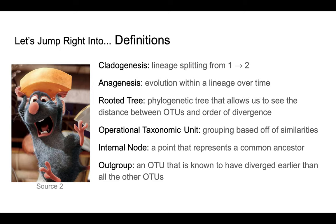A rooted tree is a phylogenetic tree that allows us to see the distance between OTUs and the order of divergence. An operational taxonomic unit, or an OTU, is a grouping based off of similarities. An internal node is a point that represents a common ancestor. And finally, an outgroup is an OTU that is known to have diverged earlier than all of the other OTUs.